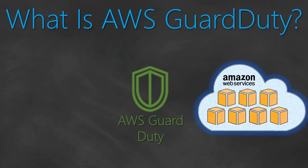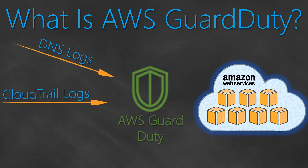It is going to sit outside your AWS account. You don't have to do anything — you don't have to provision an instance or install some clients inside your networks. You just have to enable it in your account, and once you enable it, it is going to look at all the DNS logs — that is the DNS queries coming into your account — and it is also going to take in the CloudTrail information for your account, and finally the VPC flow logs.